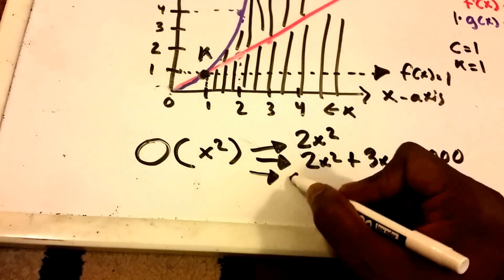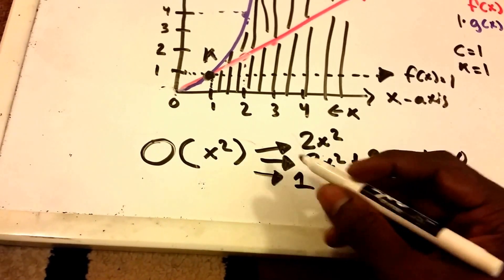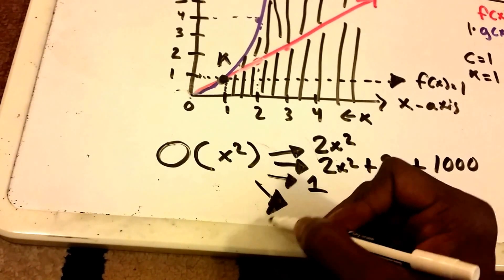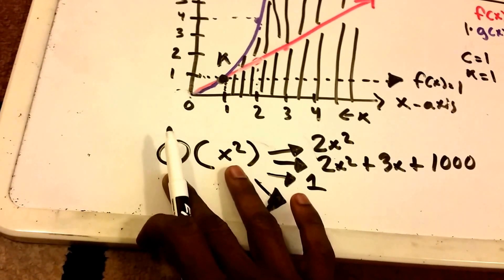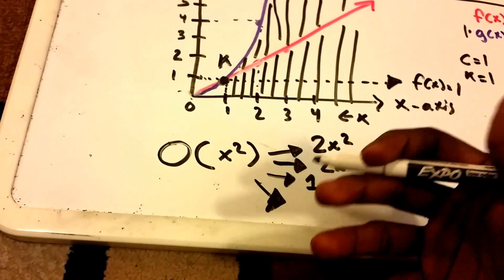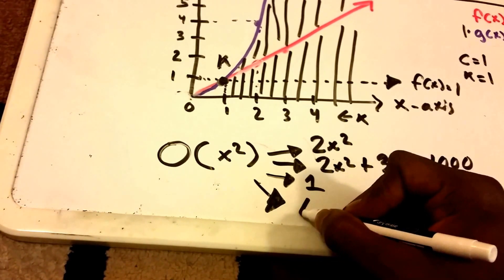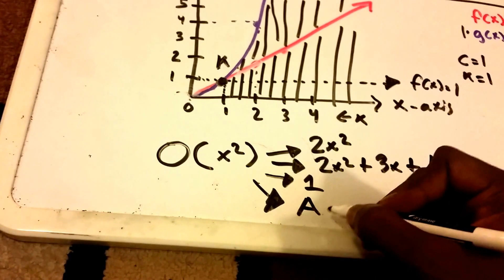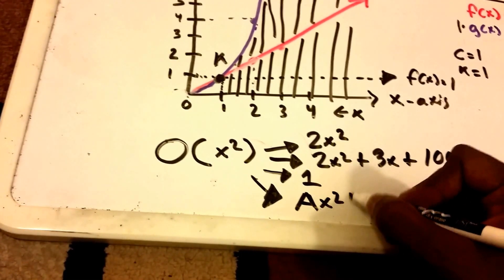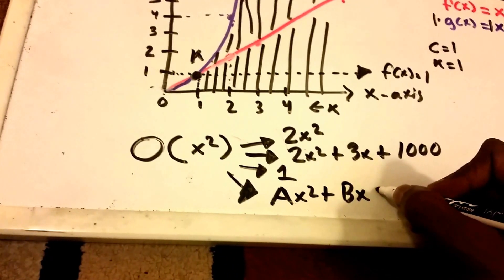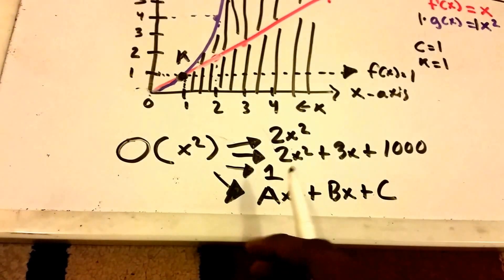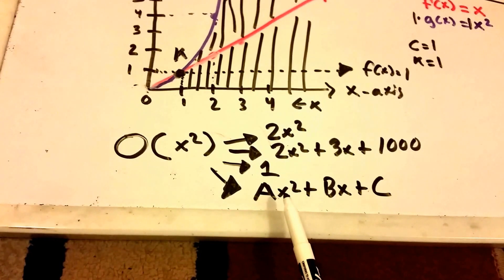So yeah, I could put just one here. And in general here, what we can see is that this set of Big-O of X squared contains all of the functions of f of X that are equal to A times X squared plus B times X plus C, where A, B, and C are all positive constants.